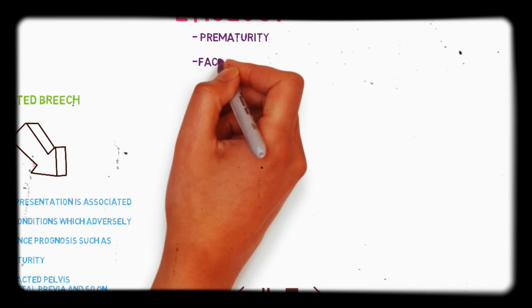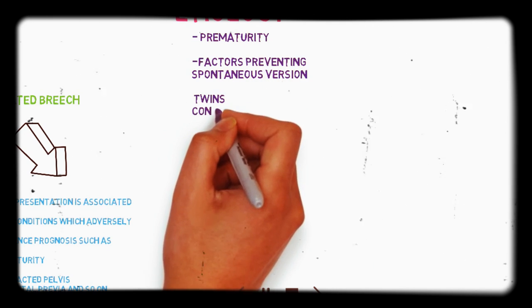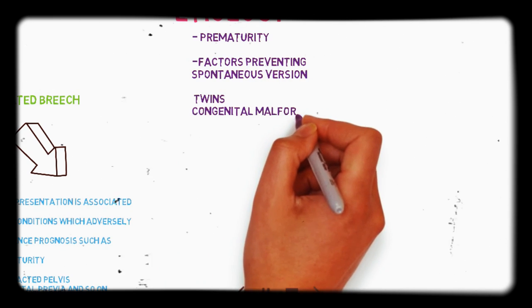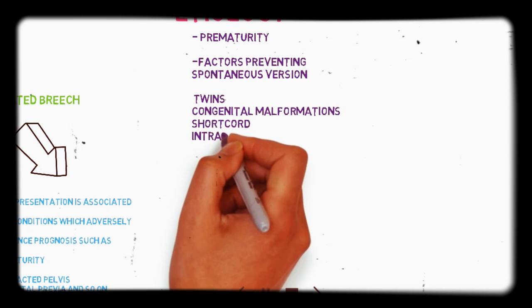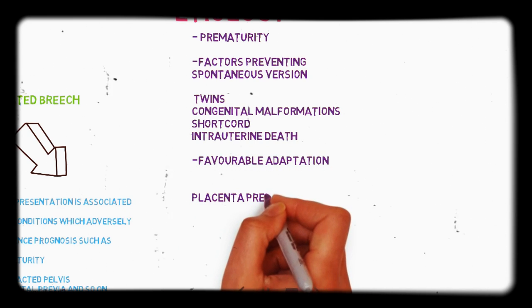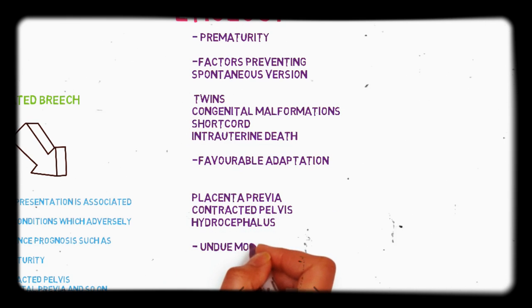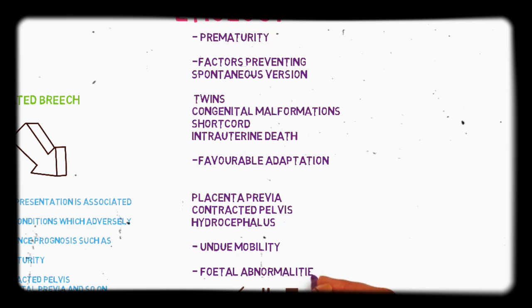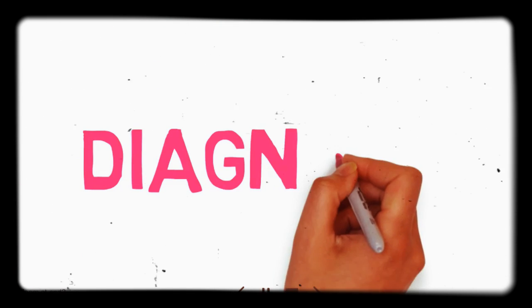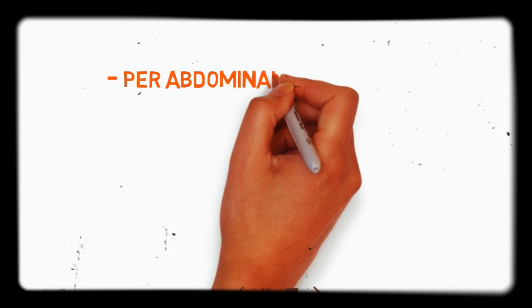Next is the etiology or causes of breech presentation. First is prematurity. Then factors which prevent spontaneous version, such as twins, congenital anomalies, short cord, intrauterine death, etc. Then favorable adaptation like placenta previa — if placenta previa is present and the baby is rotating into the head position, it is a complication. Other causes include contracted pelvis, hydrocephalus, polyhydramnios, and fetal abnormality.